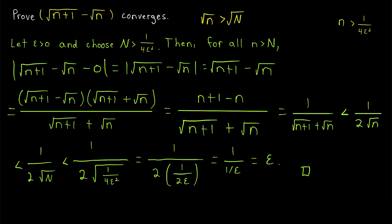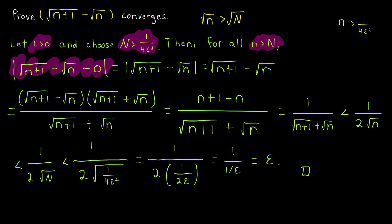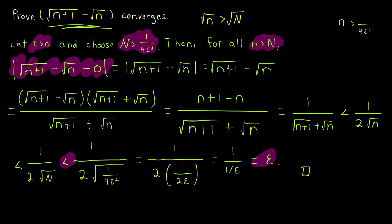We've shown that for any ε > 0, if we choose a natural number N greater than 1/(4ε²), then the distance between every term of our sequence after the Nth term and 0 is less than ε. So the terms get arbitrarily close to zero, and our sequence of differences between the square roots of consecutive positive integers converges to zero.